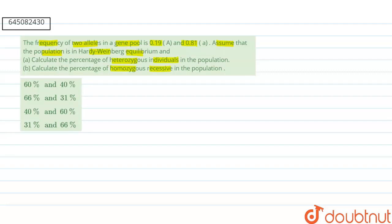So if we are talking about Hardy-Weinberg law, according to Hardy-Weinberg law, p plus q is equal to one. That means we are talking about homozygous dominant and recessive conditions.